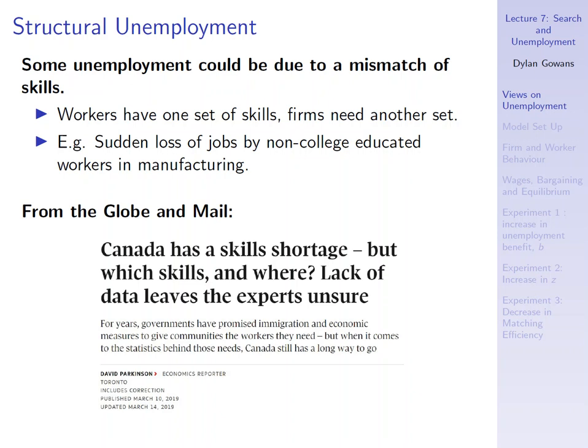There's a Globe and Mail headline: 'Canada has a skills shortage — but what skills and where? Lack of data leaves the experts unsure.' I included this because before my PhD I worked on Parliament Hill as an analyst with the House of Commons Finance Committee, and every year business groups would say 'we have this skills shortage and need to train more people.' But it was never clear what skills they needed or how to attain them. In any case, this is an explanation for unemployment you see a lot.